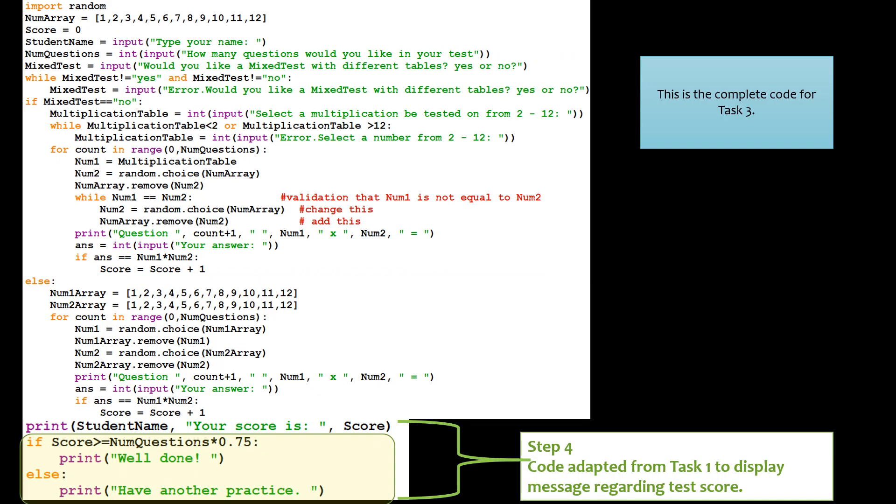Finally, in step 4, we're going to need to modify the message that we're going to print. So if the score is greater than or equal to 75% of the number of questions, print well done, else print have another practice.